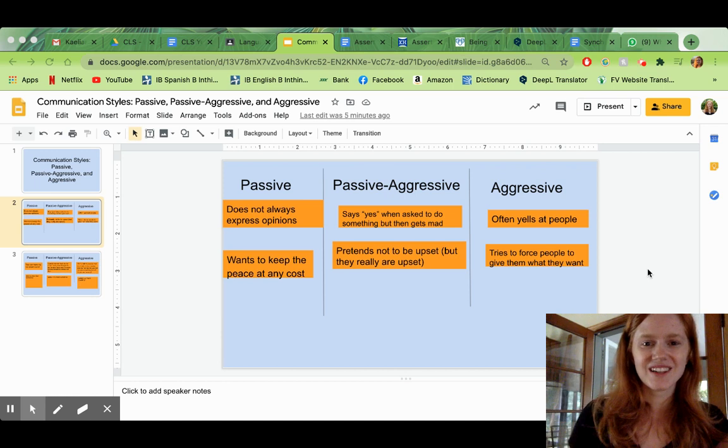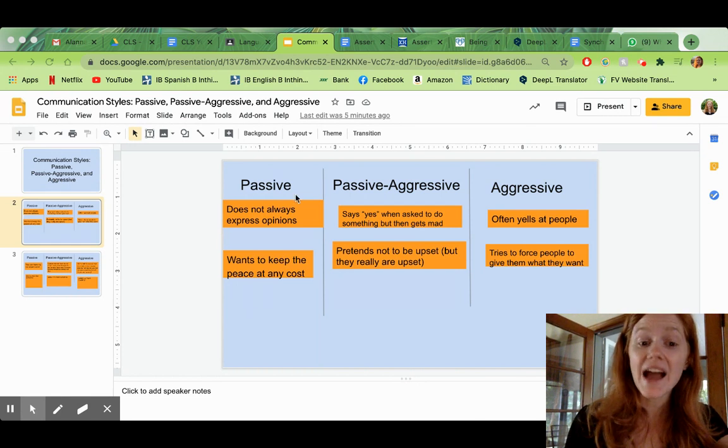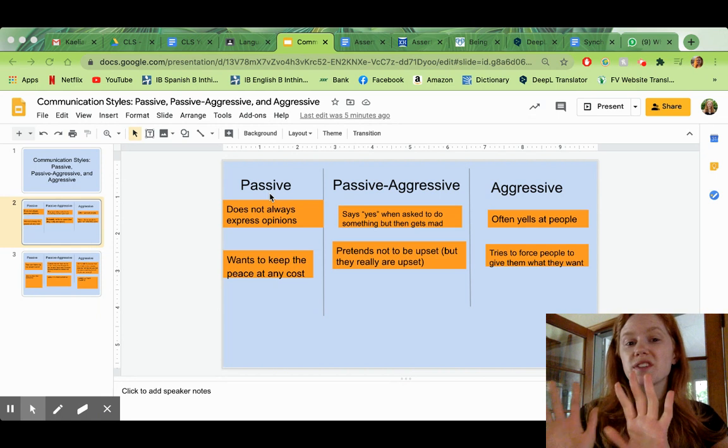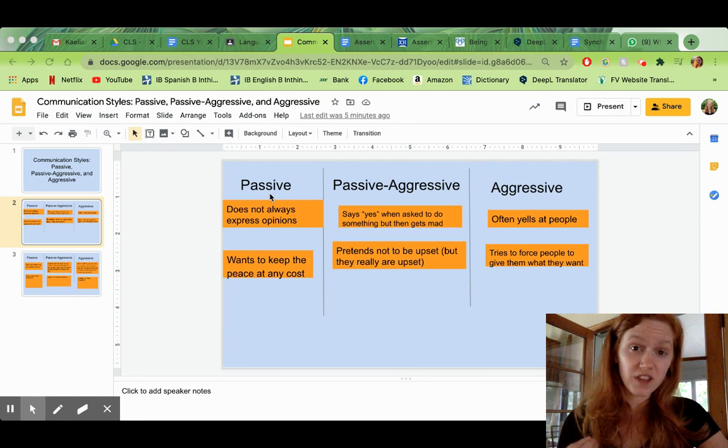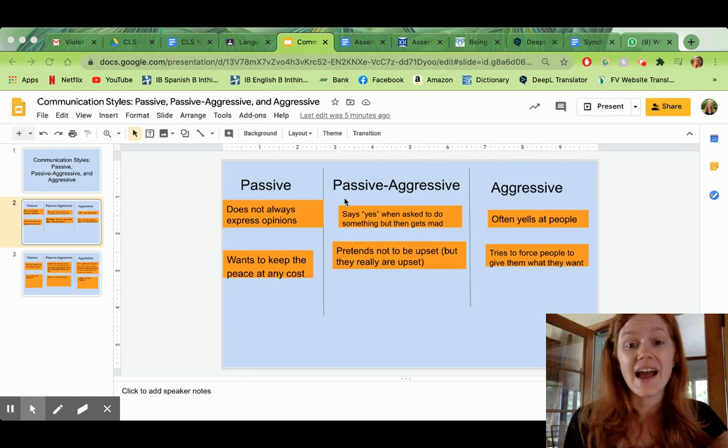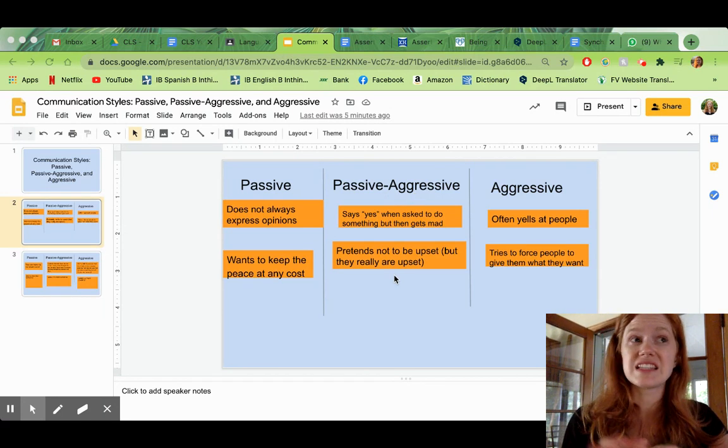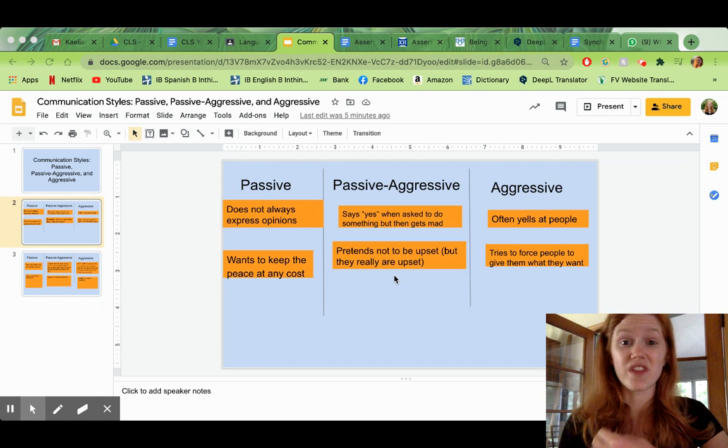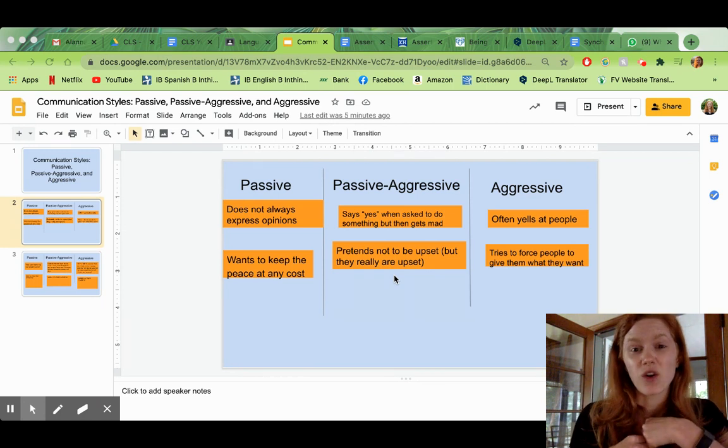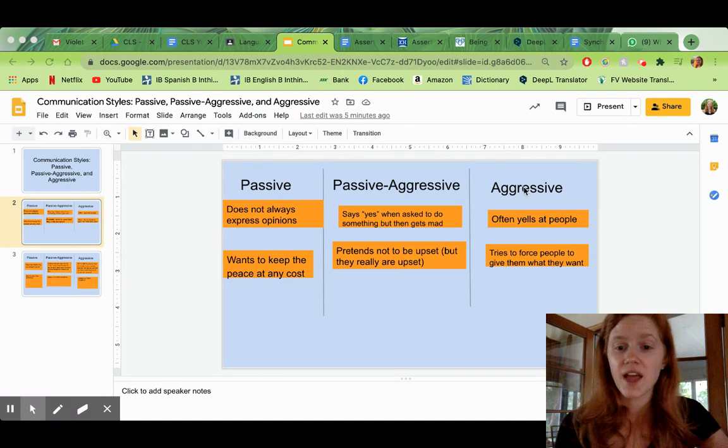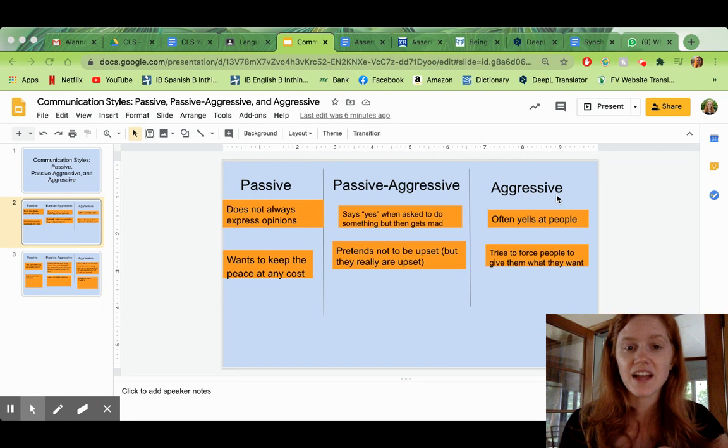Hi everyone! We have talked about three different communication styles so far. We talked about passive communication, when people don't always express their opinions, they go with the flow, they don't say what they really think or need or feel. We have talked about passive aggressive communication, when somebody says that they're okay or that they agree or they say yes in the moment, but really deep down they don't like what's happening or they feel something different and so then that can lead them to be angry later. And then we talked about aggressive communication and that's when somebody says very forcefully what they think and feel and want.